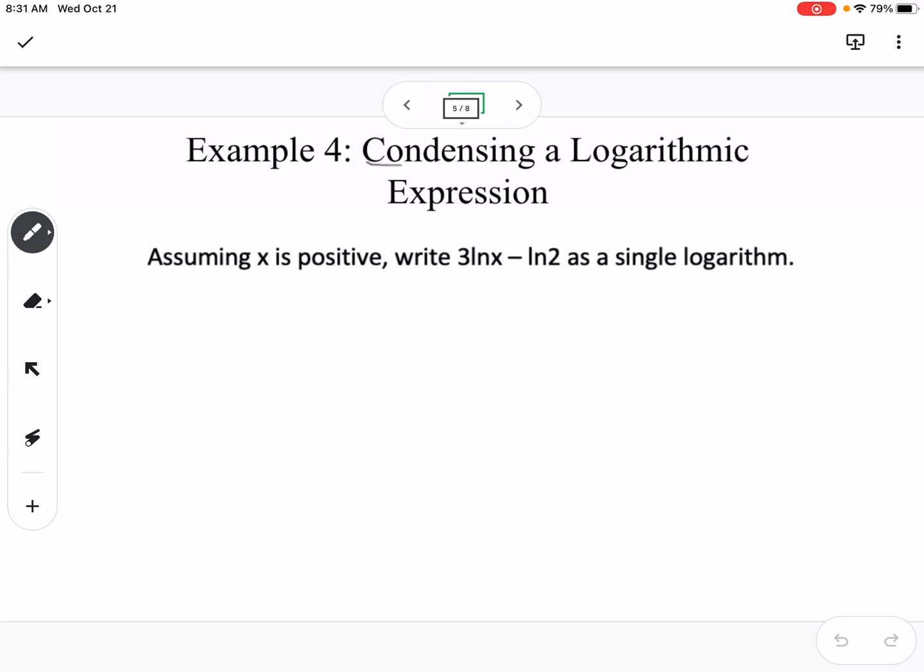Our next example is condensing. So this is going the opposite direction. Assuming x is positive, write 3 natural log of x minus natural log of 2 as a single log. So the first thing that I notice is it's kind of working backwards from what we did in the expanding problem.